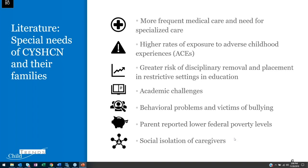Here we highlight some findings from existing literature on the quality of life for this population — these are not from our analyses. Parents of children and youth with special health care needs report more frequent medical care and greater need for specialized care. These children also face greater exposure to adverse childhood experiences, which we'll see later in our findings. In education settings, the literature shows they face greater risk of disciplinary removal or placement in restrictive settings, academic challenges, behavioral problems, and difficulties with peers such as bullying. Families also experience unique challenges such as financial stress due to medical care costs and social isolation.